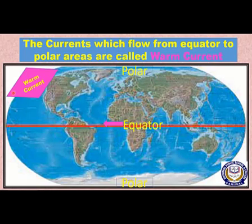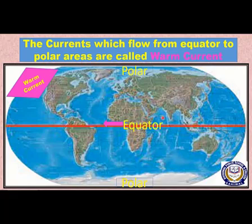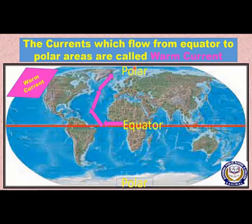Now we are going to study about warm currents. The currents which flow from the equator to polar areas — the equator is here in the center of the Earth — the currents which flow from equator to polar areas, as shown by these arrows indicating movement from equator towards polar areas, are called warm currents.